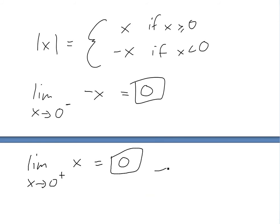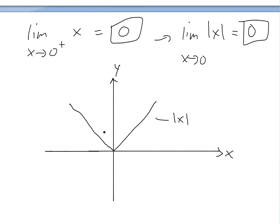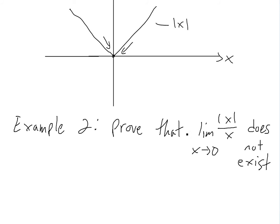Thus the limit as x approaches zero of absolute value of x equals zero. If you graph absolute value of x, it looks like a V-shape — a line on both sides, a mirrored image. As you can see, the limit from either side is approaching zero.